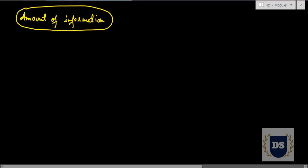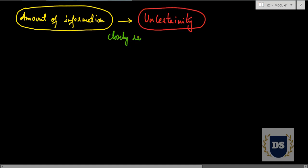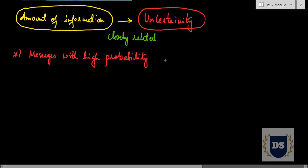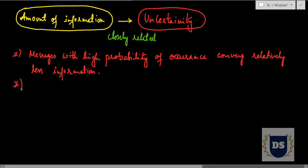To summarize the previous situation: the amount of information contained in an event is closely related to its uncertainty. Messages with a high probability of occurrence convey relatively less information, and if an event is certain to occur, it conveys zero information.